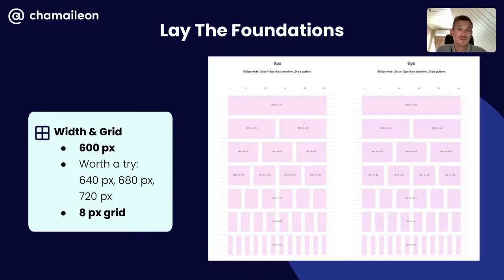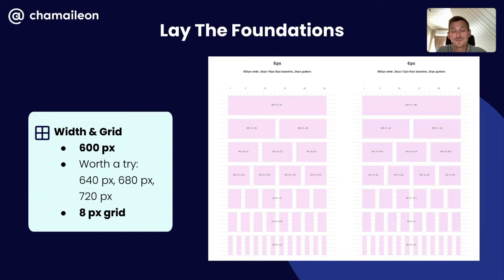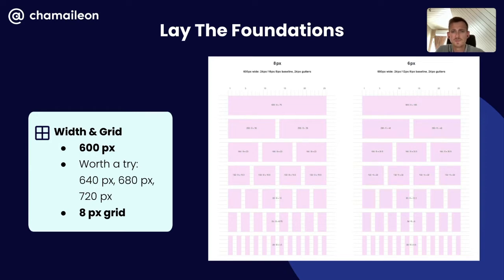An important next step is to decide on your email width and grid system. Most brands still use 600-pixel email width, but you can go up to 720 pixels if you want bigger white space — just make sure you don't end up with too-long, hardly-readable lines of text. For the grid system, best practice from email geeks like Mark Robbins is to use an 8-pixel grid — meaning you should use 8 pixels or multiples of it for images, text columns, paddings, or margins. The majority of popular screen sizes are divisible by 8, so your visuals won't look distorted on most devices.